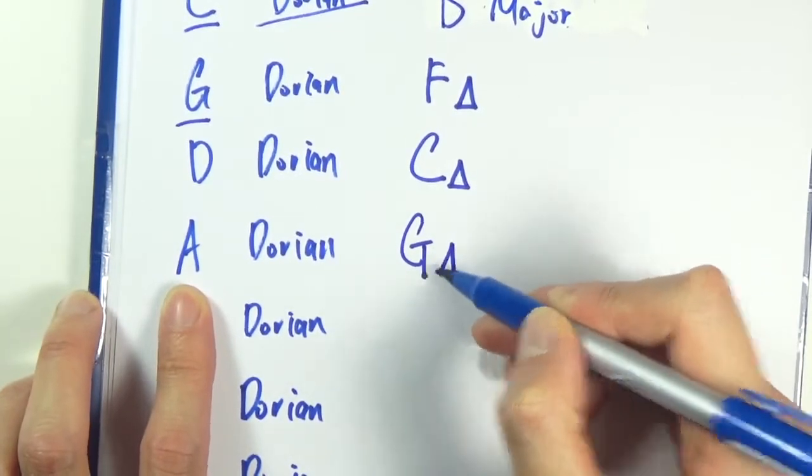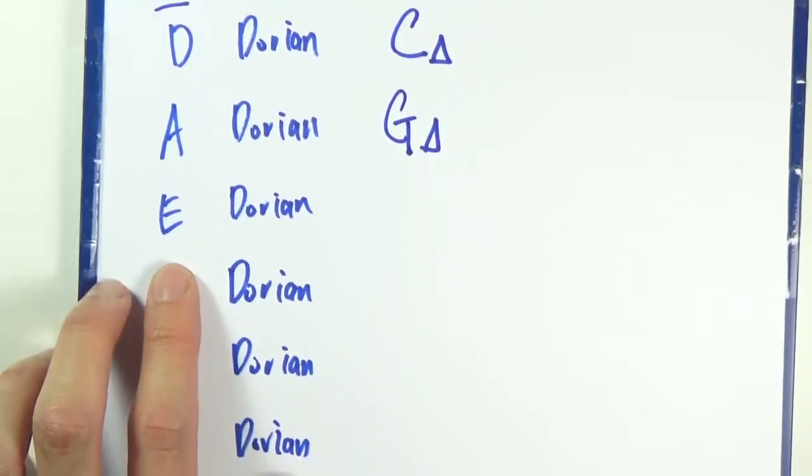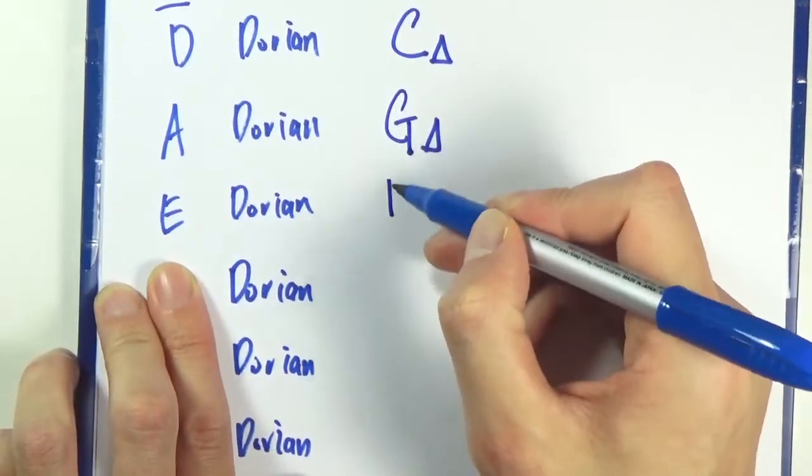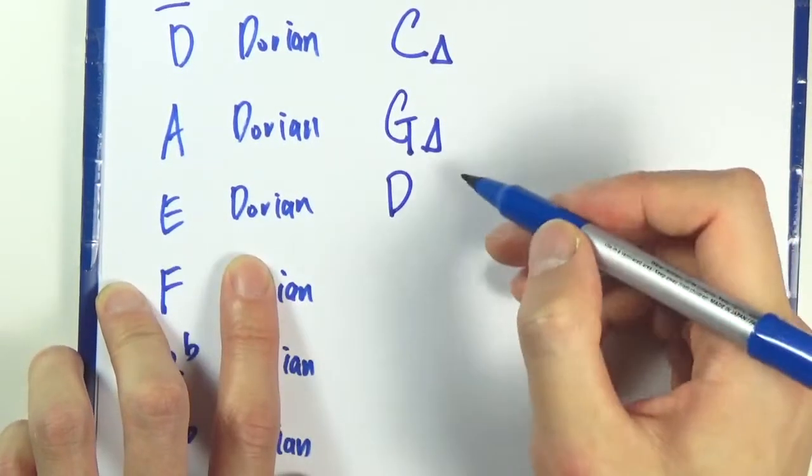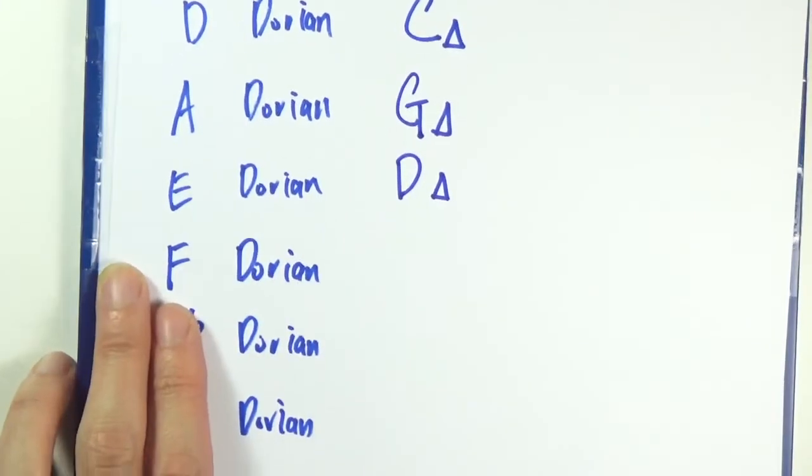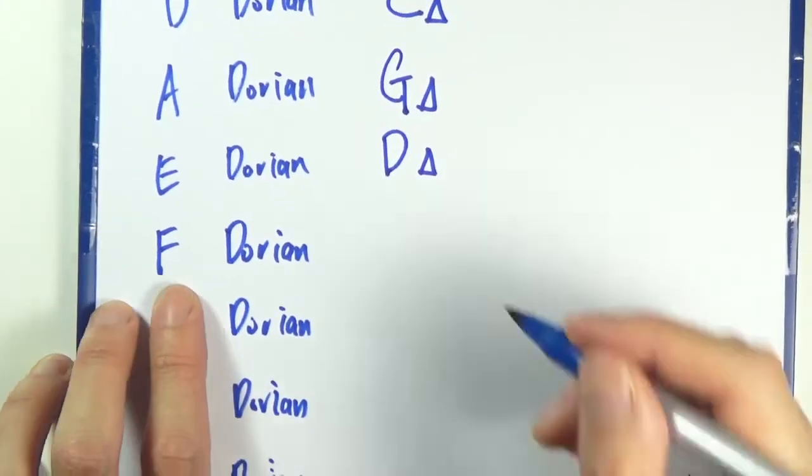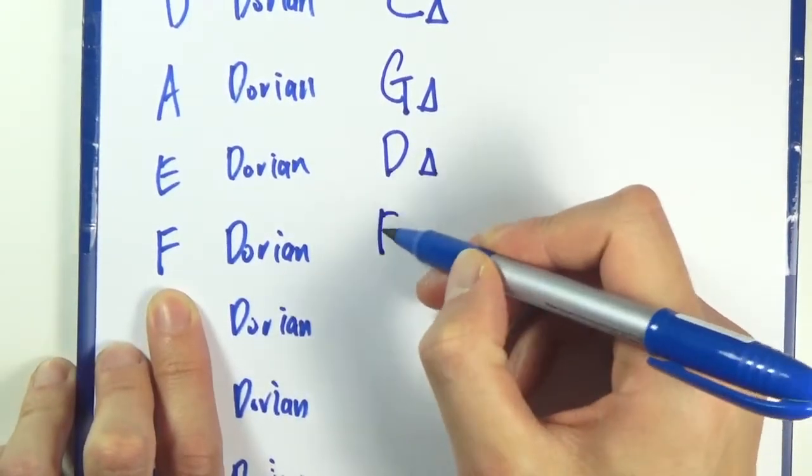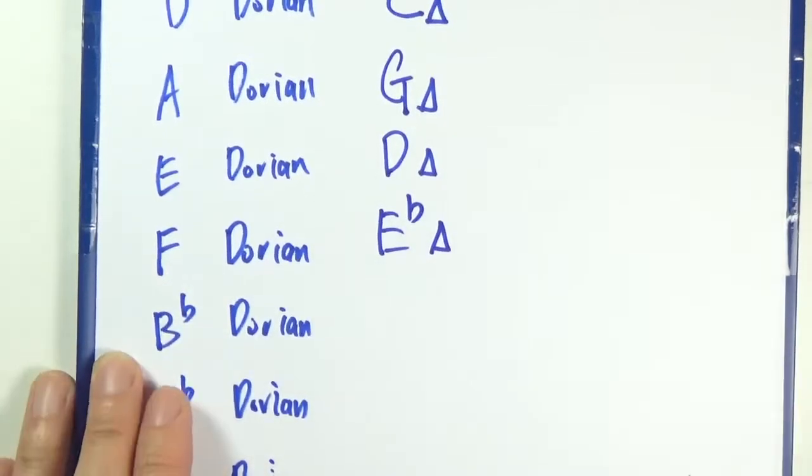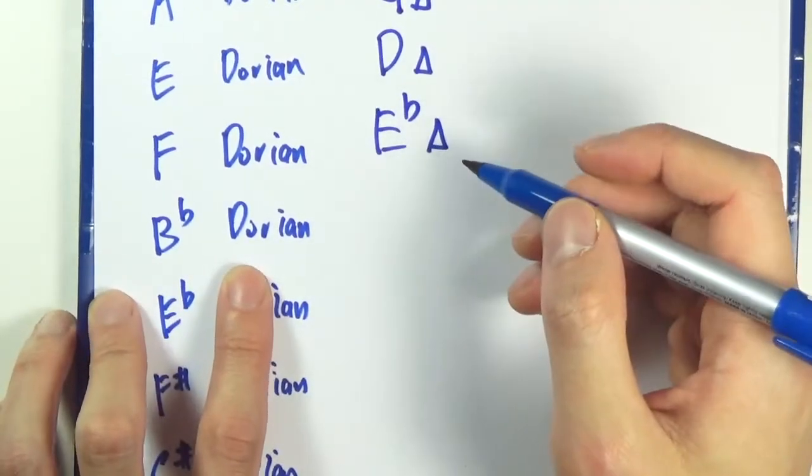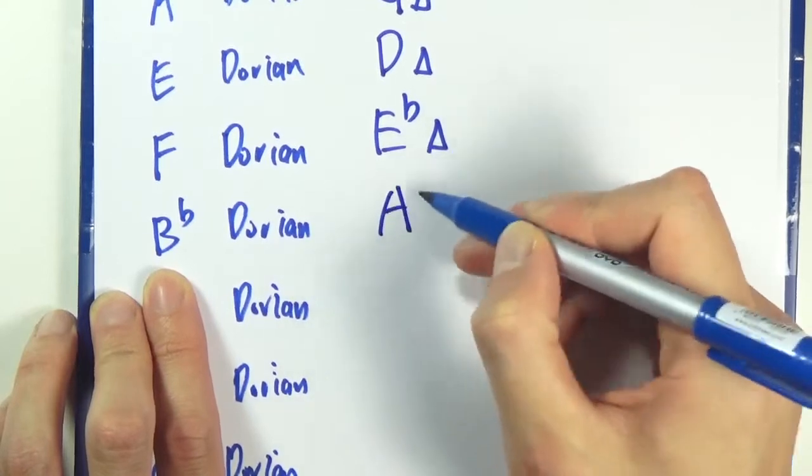E Dorian - you go down a whole step, and that's D major. F Dorian - you go down a whole step, that's E flat major. B flat Dorian - you go down a whole step, that's A flat.